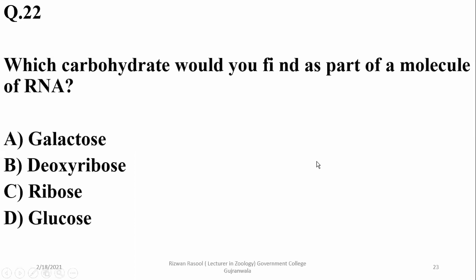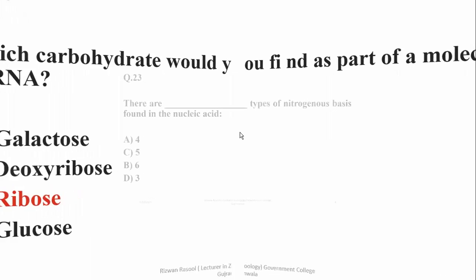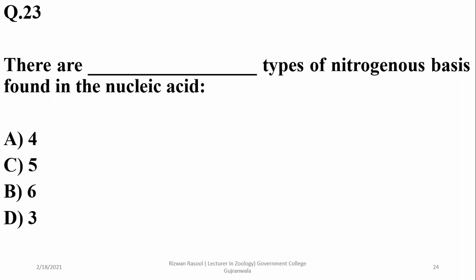Question 22: Which carbohydrate would you find as part of a molecule of RNA? RNA contains ribose sugar; DNA contains deoxyribose. The right option is charlie — ribose is the right option in case of RNA, and deoxyribose for DNA. Question 23: There are five types of nitrogenous bases found in nucleic acids: adenine, guanine, cytosine, thymine, and uracil in case of RNA.